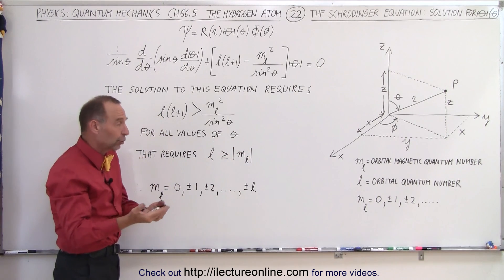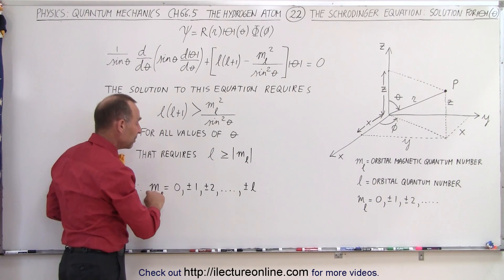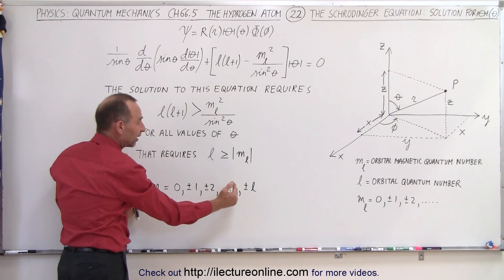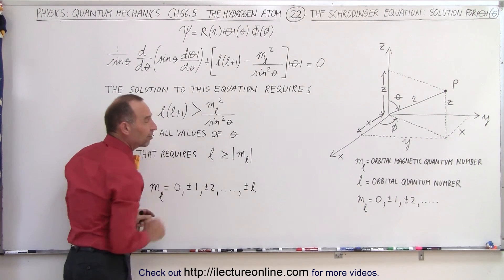which means it could be the negative value or the positive value of l, but that means that m sub l is now limited to the possible values that it can have to the value of l itself.